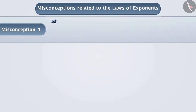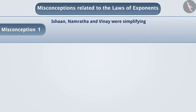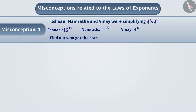Misconception 1. Ishan, Namrita and Vinay were simplifying 4 to the power of 3 multiplied by 4 to the power of 5. Ishan got 16 to the power of 15, Namrita got 4 to the power of 15, and Vinay got 4 to the power of 8. Find out who got the correct answer.